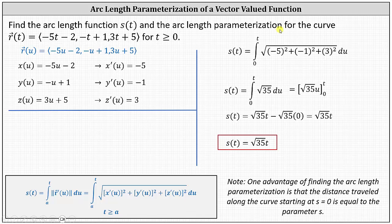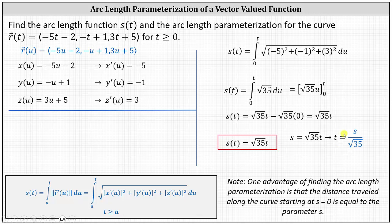Next, to determine the arc length parametrization for the curve given by the vector valued function R of t, we want to write R of t as a function of s, where s is the arc length. Using our arc length function, we know S equals square root of 35 times t. Solving for t, we divide both sides by square root of 35, giving us t equals S divided by square root of 35. Notice that since t is greater than or equal to 0, S must also be greater than or equal to 0.